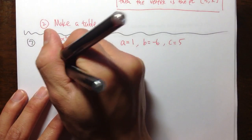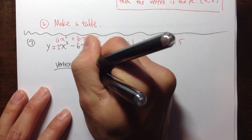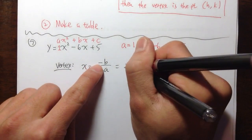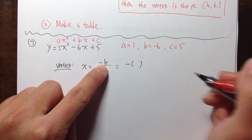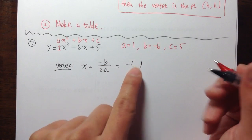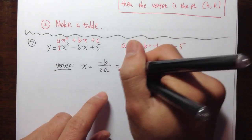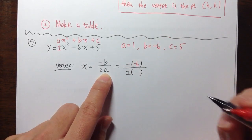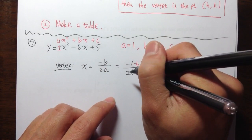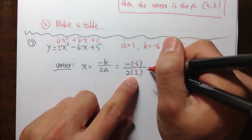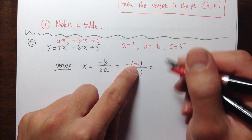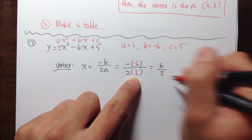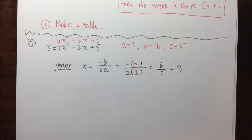The x value of the vertex is going to be negative b over 2a. So I have negative of b, which is negative 6, over 2 times a, which is 1. On the top, I have negative times negative 6, which is positive 6. Over the bottom, 2 times 1, which is 2. And 6 divided by 2 is equal to 3.